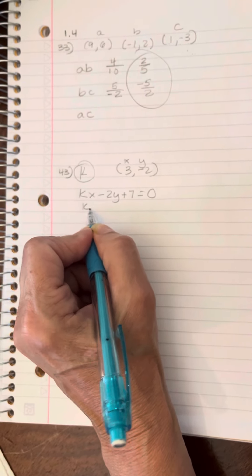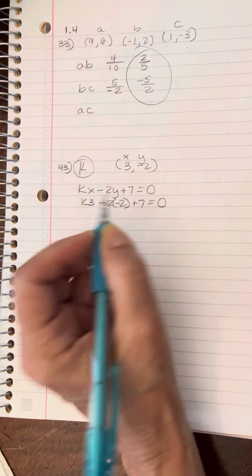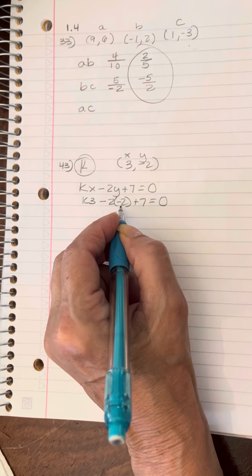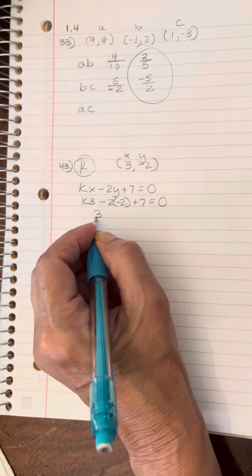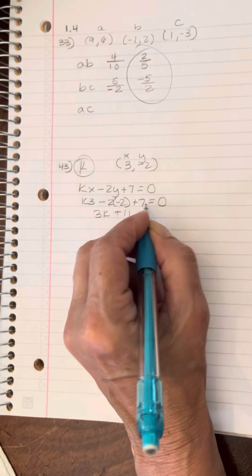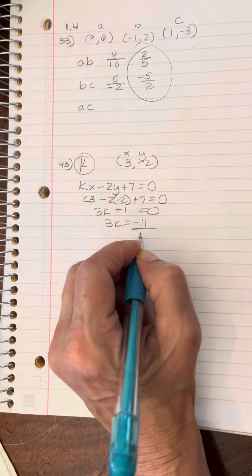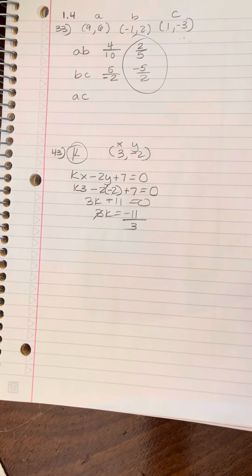So it's K times three minus two times negative two plus seven equals zero. That's positive four. So it's three K plus 11 because that's four plus seven equals zero. Three K is negative 11. K is negative 11 thirds.